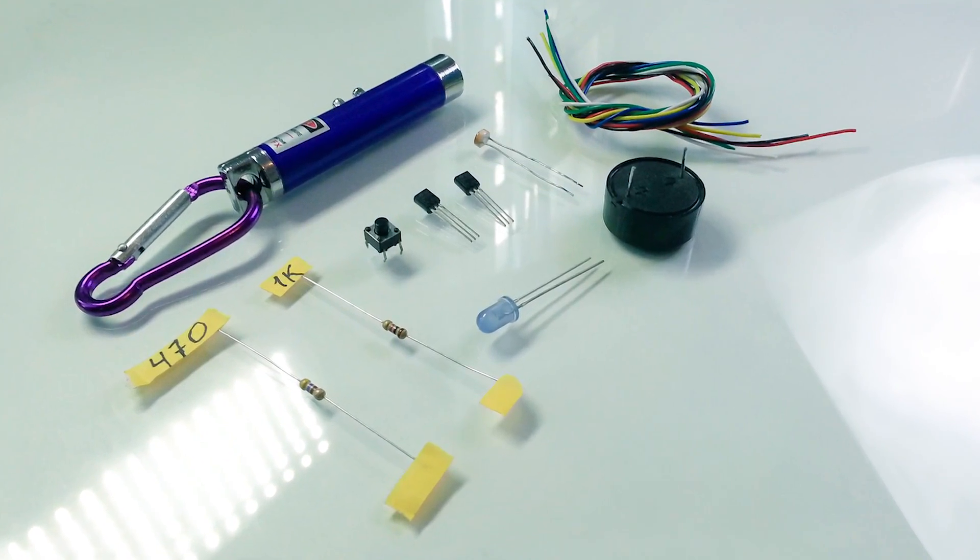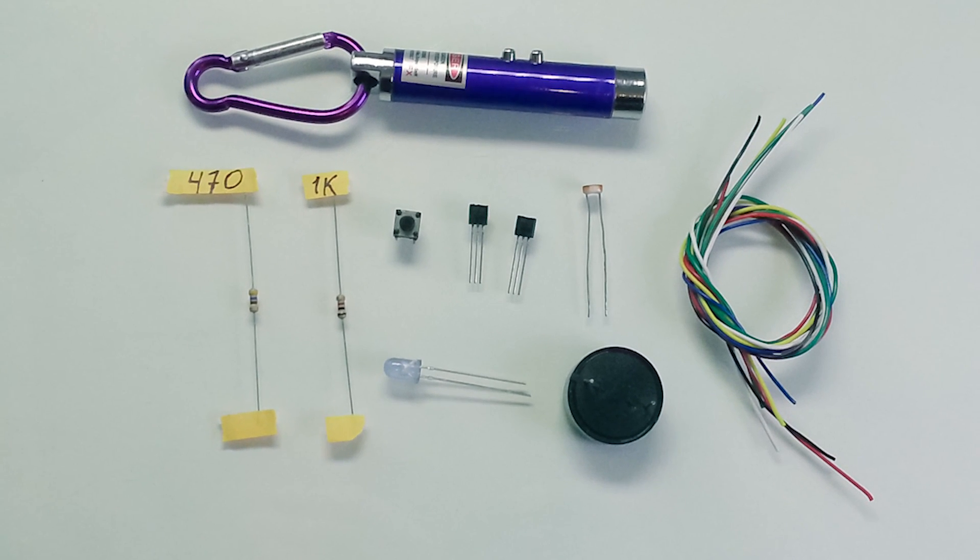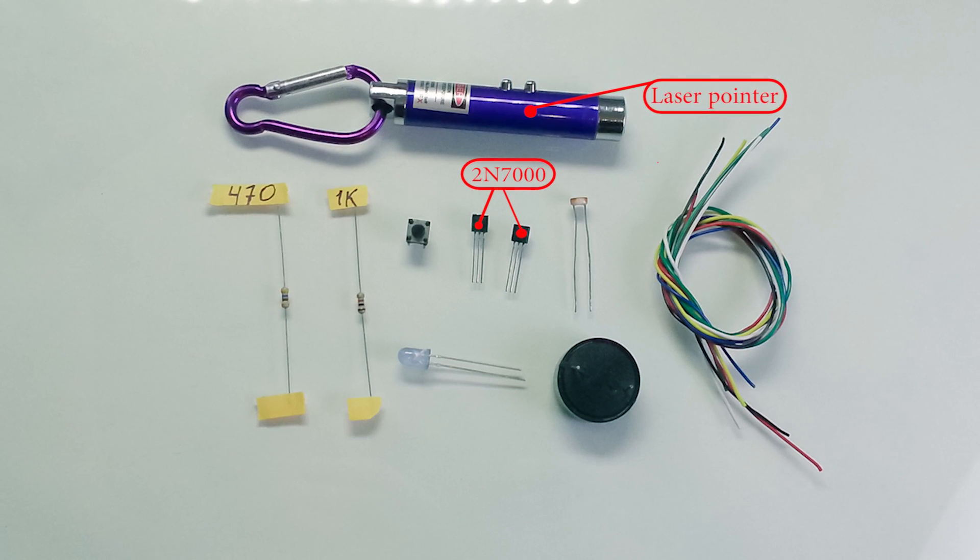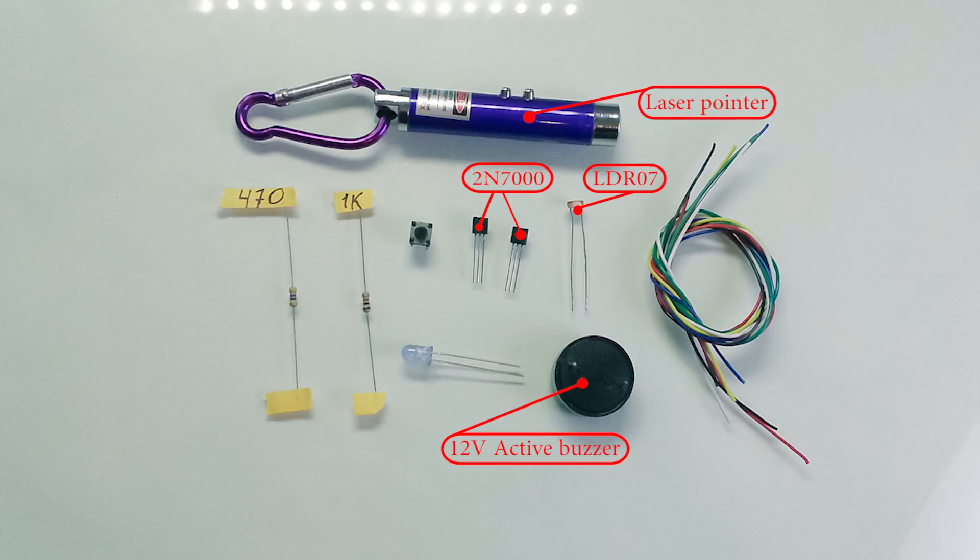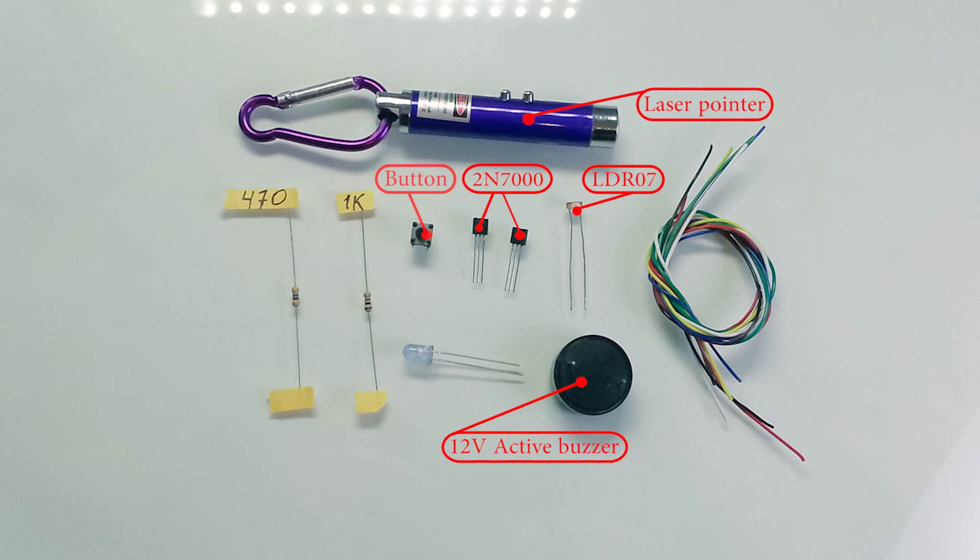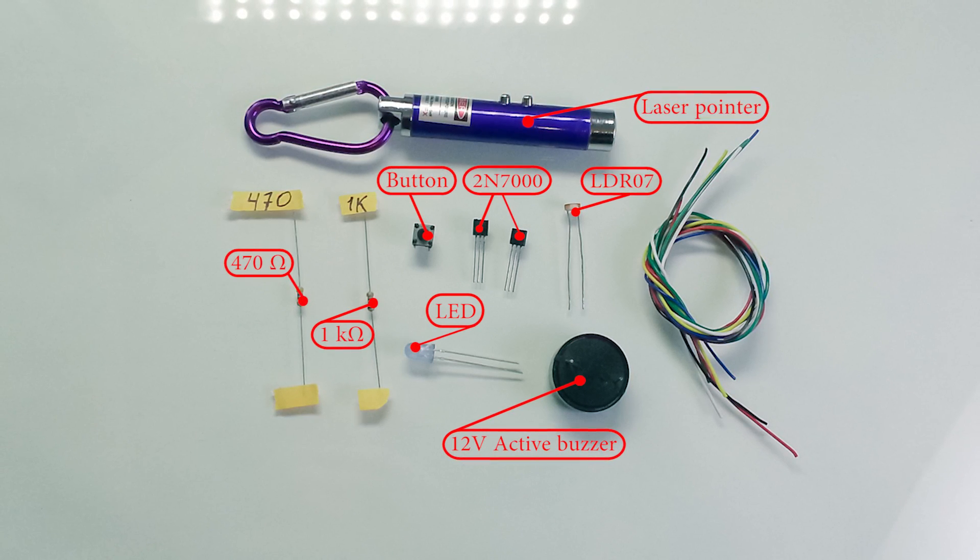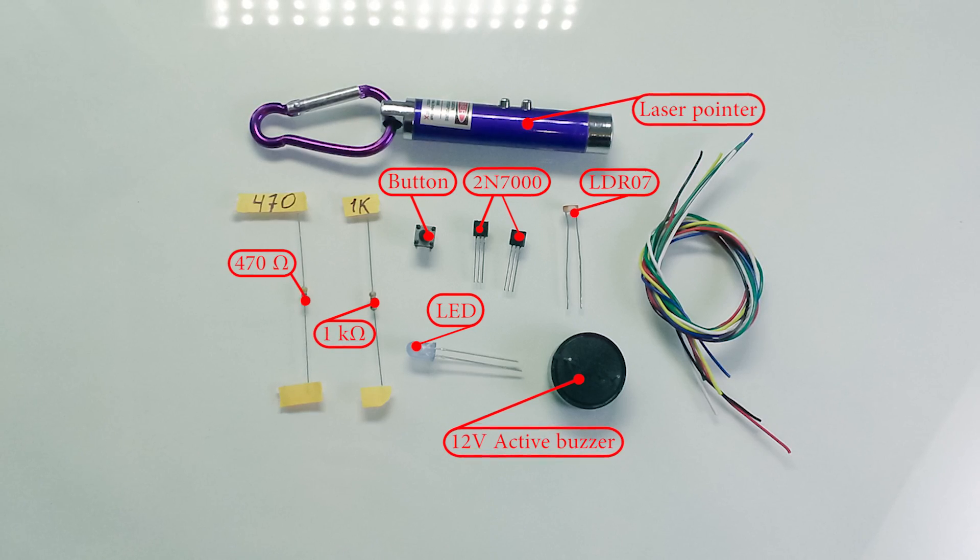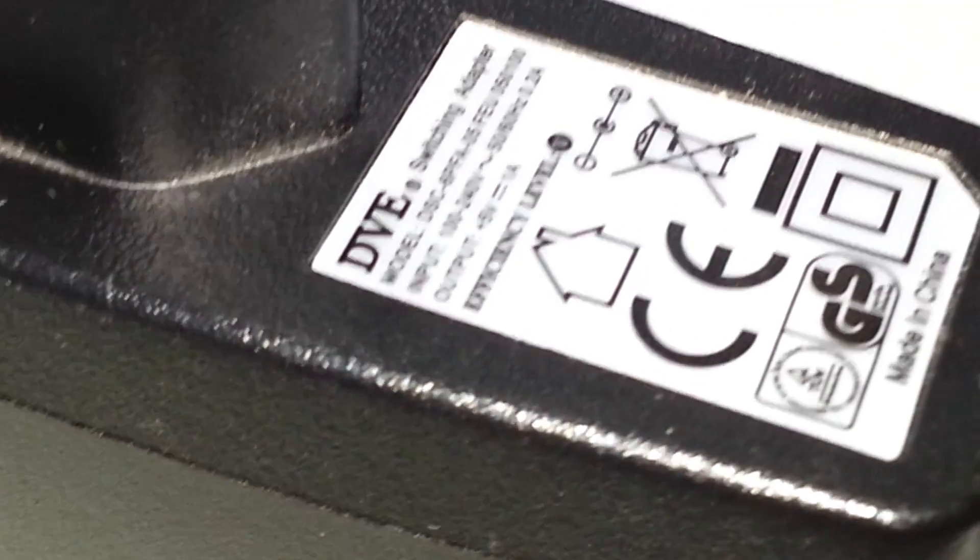Let's have a look at what components we need for making such an alarm system. The main component is of course a cheap laser pointer. Also we'll need 2 MOSFET transistors 2N7000, an active buzzer, a light-dependent resistor LDR07, a button for reset, an LED for indication and 2 resistors - one 1kΩ resistor and the second 470Ω. Also we'll need wires. For the powering I will use a 5V power supply.